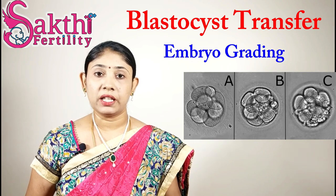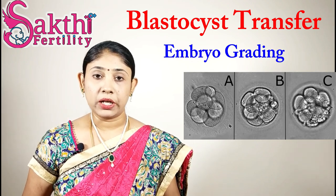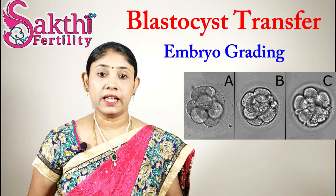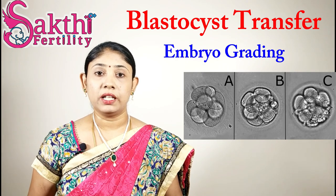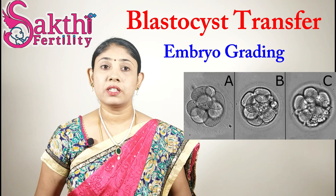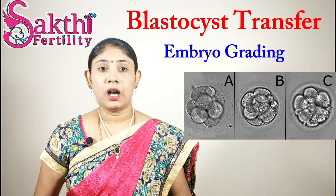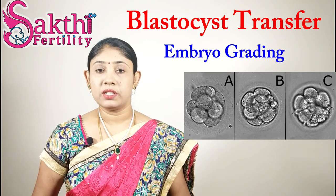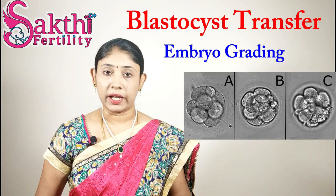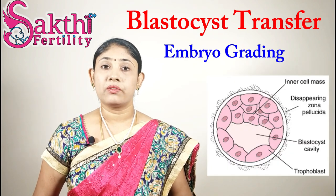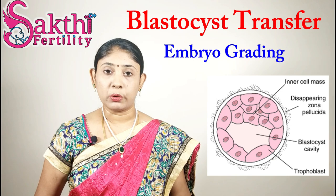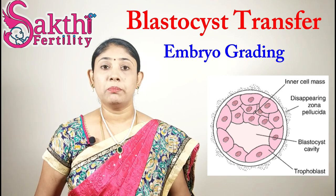If it is grade 1 then it is a good embryo. If it is grade 2 it will be of average quality. If it is grade 3 it is a poor quality embryo. The blastocyst, the day 5 embryo, has an inner cell mass and an outer trophectoderm. The inner cell mass develops into the fetus and the outer trophectoderm develops into the placenta.